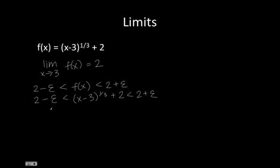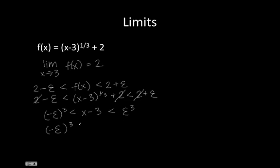If we substitute our function into the inequality we get something like this, and we end up subtracting 2 from each part and cubing everything. So negative epsilon cubed is less than x minus 3, which is also less than epsilon cubed. Then we add 3 to each section and we get something like this, giving us our two X values that correspond to f(X) values equal to 2 minus epsilon and 2 plus epsilon.